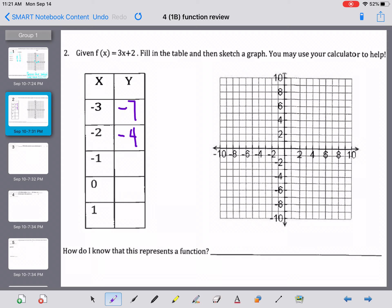Again, 3 times negative 1 plus 2 is negative 1. 3 times 0 plus 2 is 2. And 3 times 1 plus 2 is 5. So we filled in the table and now we're going to sketch that graph.